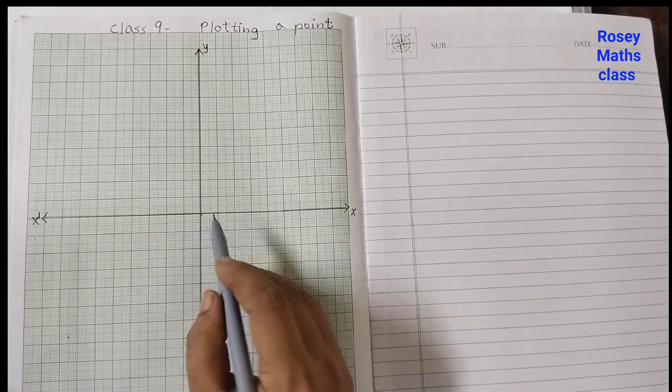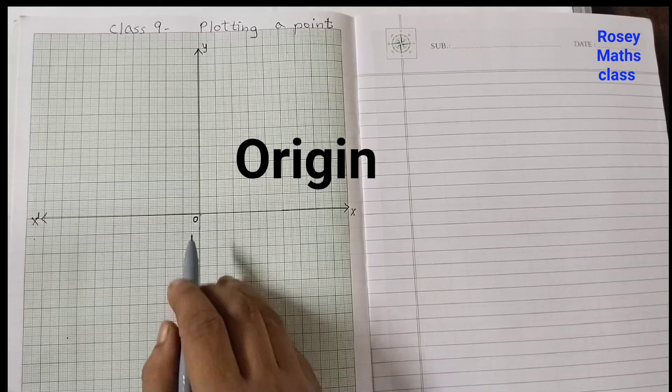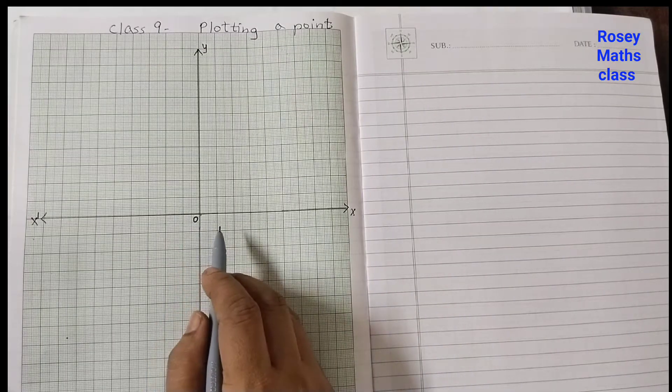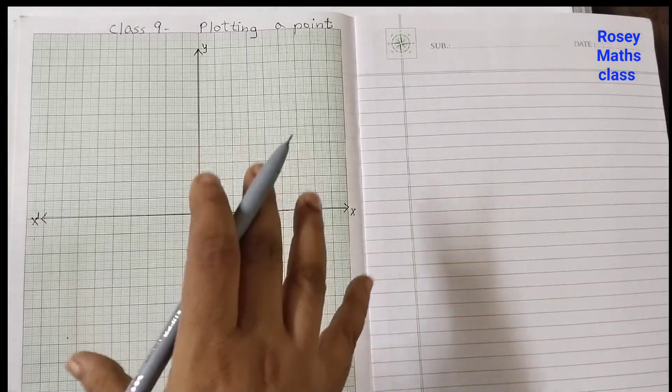This is the origin, so we will mark this as zero. I'm using a pen because the color will come darker, but you use pencil when you're graphing. Always use a pencil when you are plotting a point or graphing.